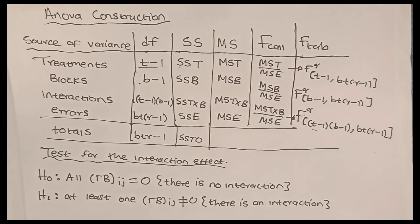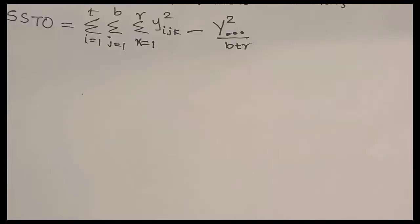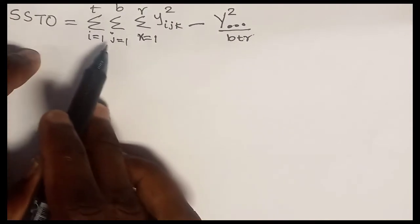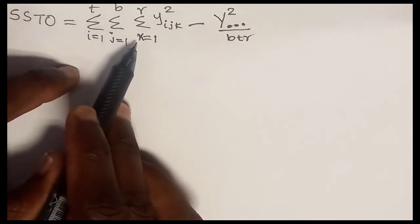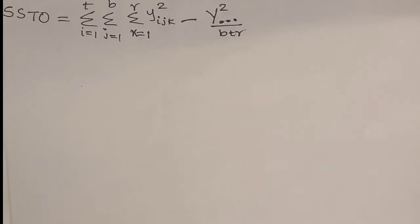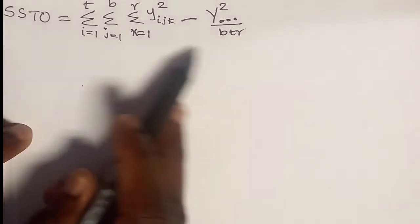Let me give you the formulas to calculate the sum of squares; then we'll do a question so you can have a better understanding. The total sum of squares SSTO is given by the triple summation (i from 1 to t, j from 1 to b, k from 1 to r) of each observation squared, minus the grand sum squared divided by the overall number of observations btr.